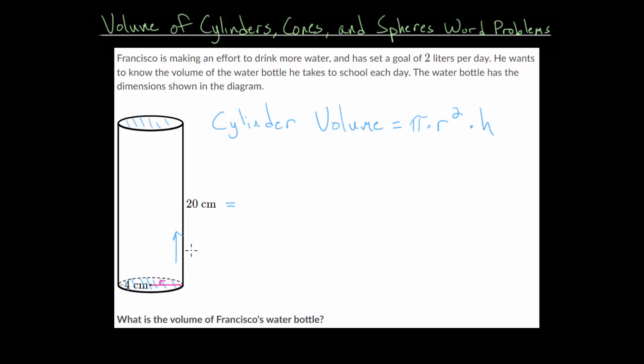We plug in these values for the height and the radius to figure out what the volume is. The volume is pi multiplied by the radius squared, where the radius is 4 centimeters, and then we'll multiply by the height, which is 20 centimeters.